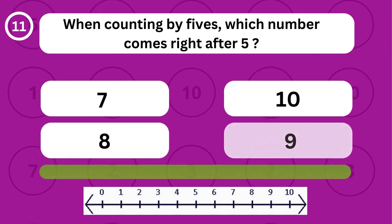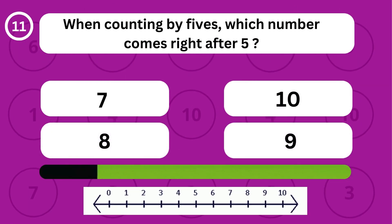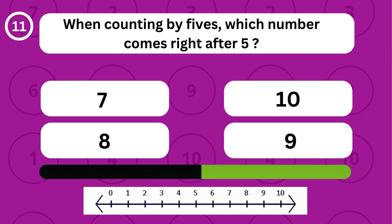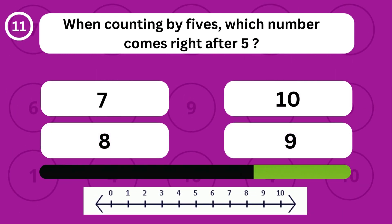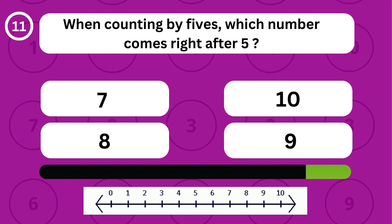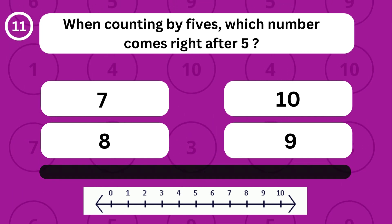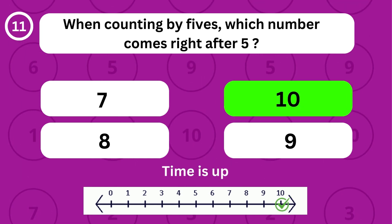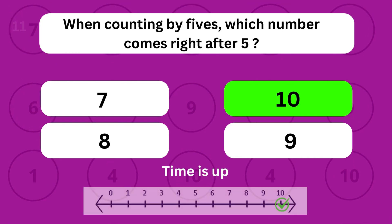When counting by fives, which number comes right after 5? When counting by fives, the number 10 comes right after 5.